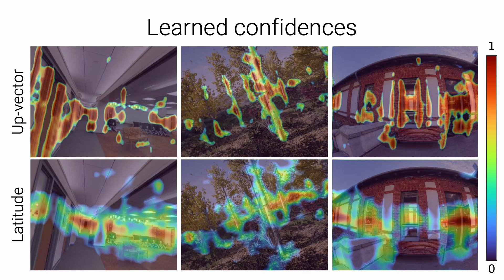We visualize the confidences learned by GeoCalib for the two components of a perspective field. Regions in red are deemed useful for the optimization, while regions in blue are ignored. The up-vector is most confident near vertical lines or upright objects like trees and buildings. The latitude is most confident near the horizon, and this horizon is actually not clearly visible in many of these images.